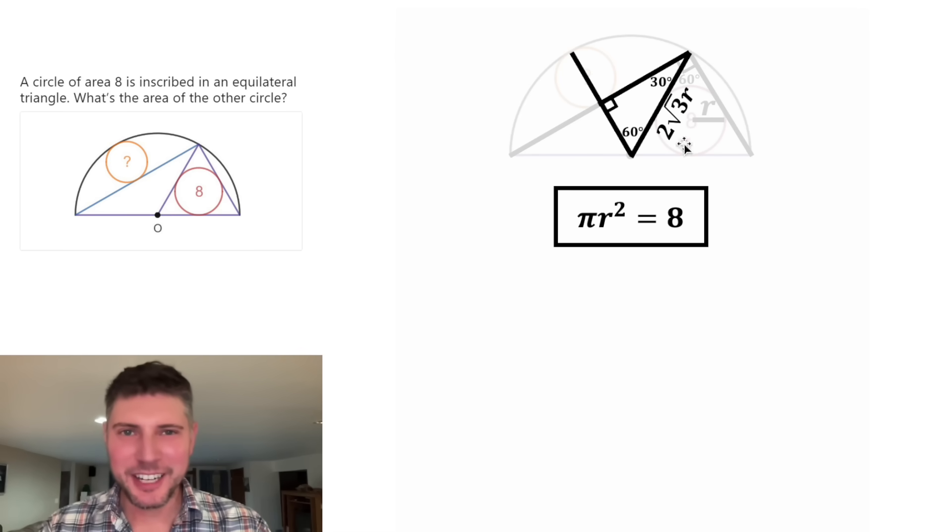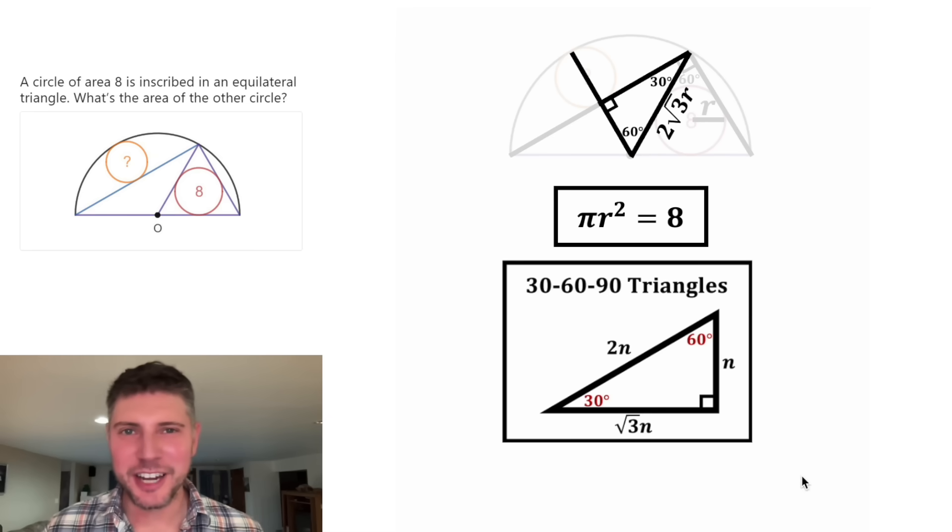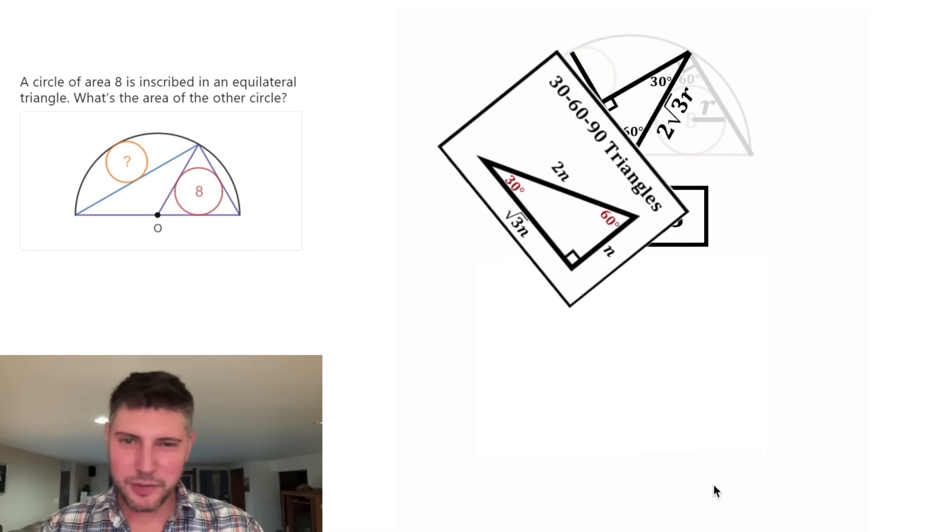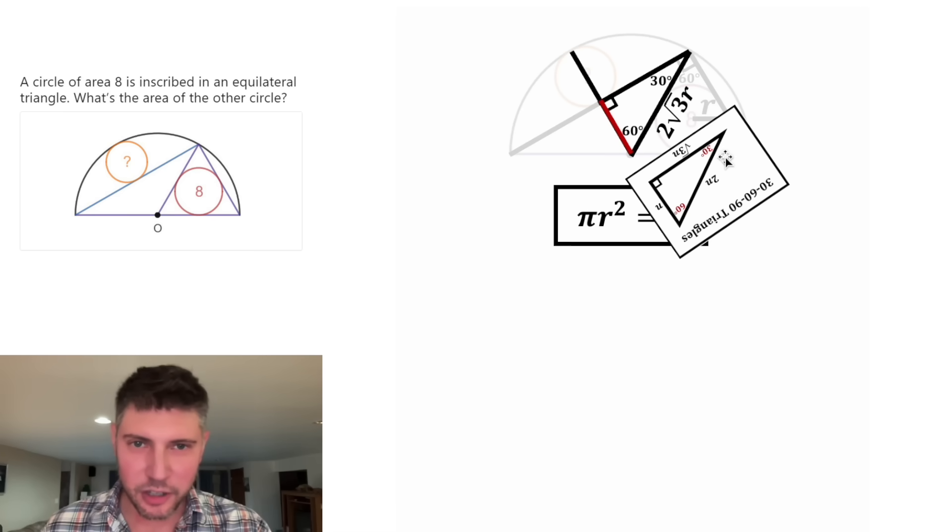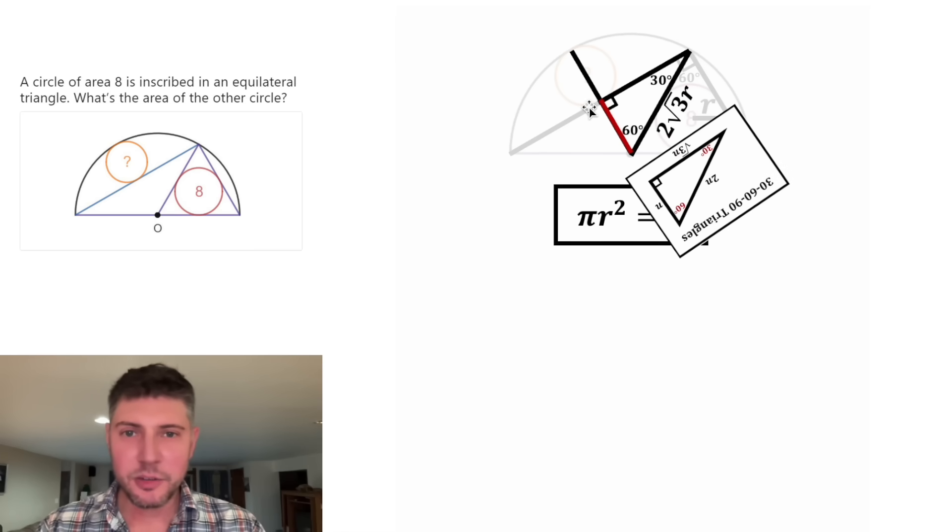Now this is another 30-60-90 triangle. So let's bring back our 30-60-90 triangle notes and pivot these closer. We know the longest side is 2√3r, and I want to use these notes to figure out this side right here. In every 30-60-90 triangle, the longest side is twice as long as the shortest side. So if this is 2√3r, this would be half of that, which is one √3r.